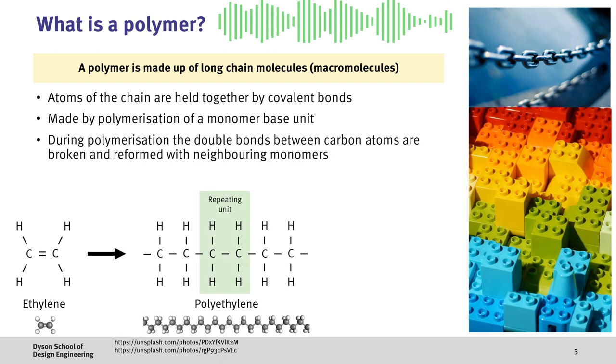During polymerization, the double bond between the carbons are broken and then reformed with neighboring monomers. Here, you can see that ethylene has been converted to polyethylene, where we highlight the repeating unit.